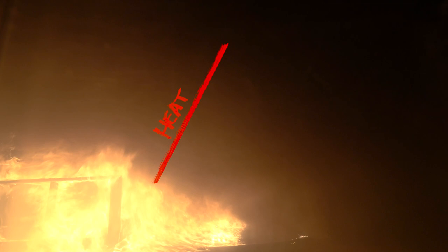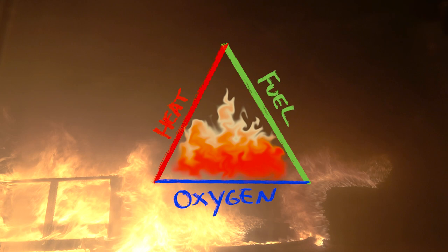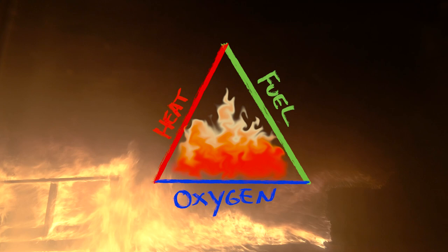In its initial stages, backdraft actually has a lot of similarities with flashover. As a fire builds, the convection current carries a lot of heat through the room. All this heat radiates down on all the flammable surfaces within that room, and as those flammable fuels begin to heat up, they will eventually start to pyrolyse. As they start to pyrolyse, they give off more and more flammable gases until they reach their auto-ignition temperature. If there is sufficient heat, fuel, and oxygen, the room will go through flashover. But if the room is well sealed, the fire will run out of the available oxygen.